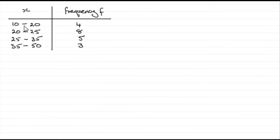And you've got your intervals 10 to 20, what this means is that we've got four values which are greater than or equal to 10 but less than 20, eight values which are greater than or equal to 20 but less than 25 and so on.